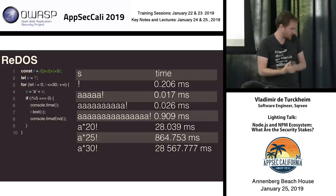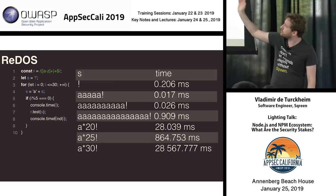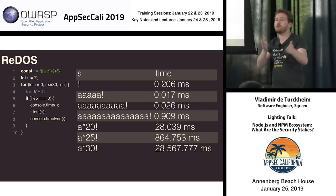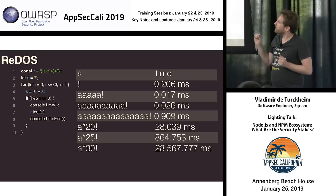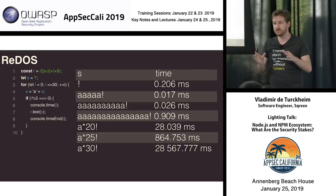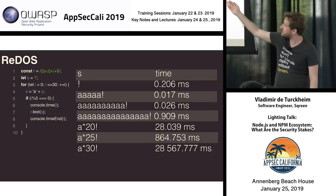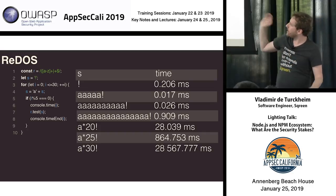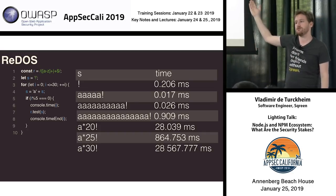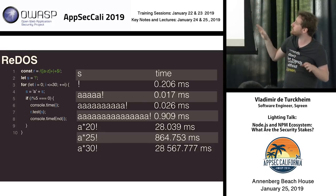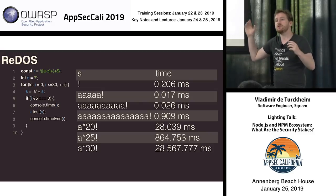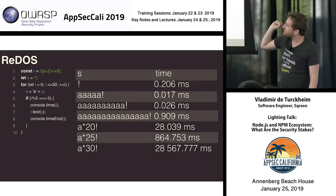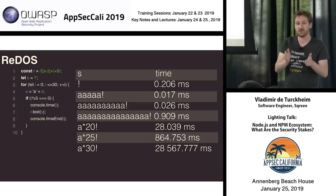Let's go through some numbers. We have a small piece of code with a regex stored in const R, and a string S that starts as an exclamation mark, with A's appended at each iteration. With just the exclamation mark, computing the regex takes about a fifth of a millisecond. With 5 A's it's still well under a millisecond. At 10 A's, same order of magnitude. At 15 A's you get close to one millisecond. At 20 A's you hit 28 milliseconds. At 25 A's you're almost at one second just to compute one regex synchronously.